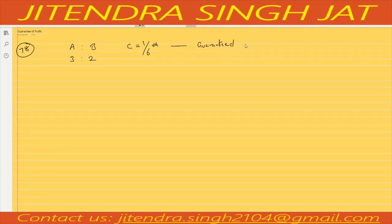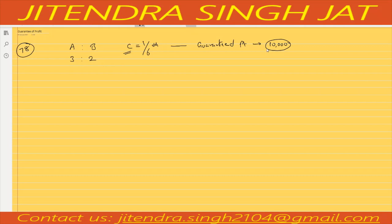The guaranteed profit is 10,000. It means in no case will C get less than 10,000. This is the meaning of guarantee of profit — if C's share goes less than 10,000, C will still get at least 10,000.